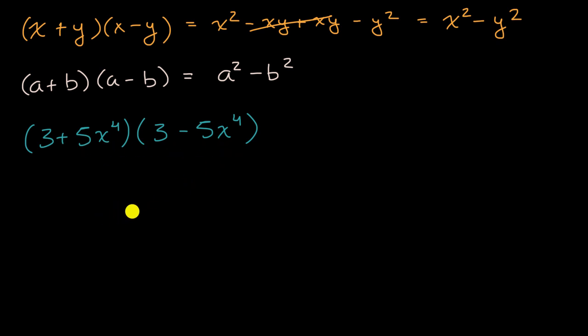All right, there's two ways to approach it. You could just approach it the way I did up here, but we already know that when we have this pattern where we have something plus something times that same original something minus the other something, that's going to be of the form of this thing squared minus this thing squared. The three is playing the role of a, so that is our a. And the role of b is being played by five x to the fourth, so that is our b.